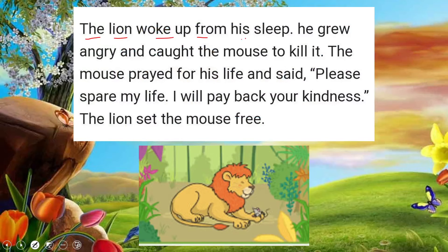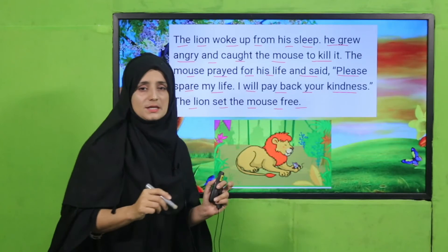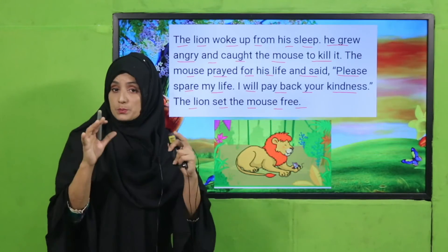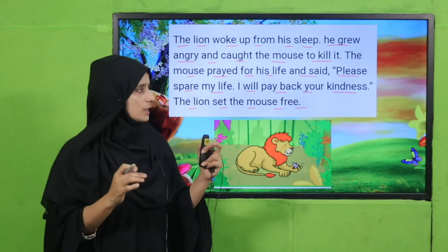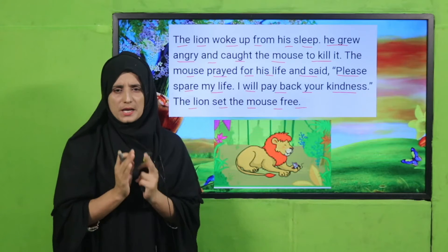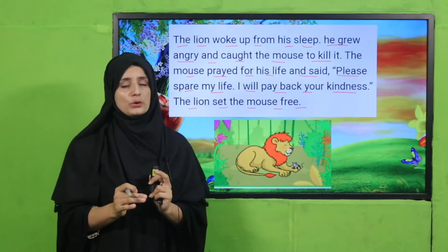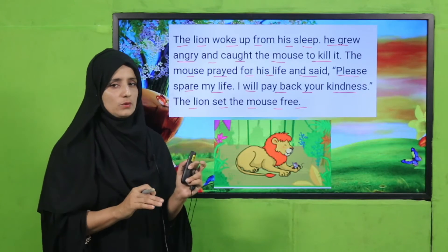The lion woke up from his sleep. He grew angry and caught the mouse to kill it. The mouse prayed for his life and said, 'Please spare my life — I will pay back your kindness.' The lion set the mouse free. So the mouse was jumping on the lion's body, the lion woke up and became angry and was about to kill the mouse, but on the mouse's plea, the lion set him free.